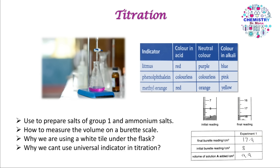For phenolphthalein and methyl orange indicators: if you start putting alkali in the flask, the initial color of the indicator will be its color in alkaline media, and after titration the final color will be its color in neutral media. If you start with acid in the flask, the initial color is the acid color and the final color is the neutral color. The final color is always the neutral color because at the end of titration we have a salt solution, and salt is neutral.